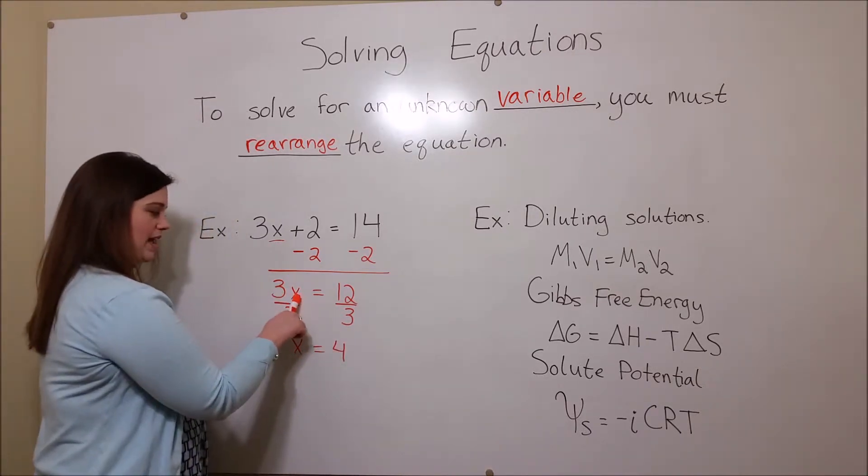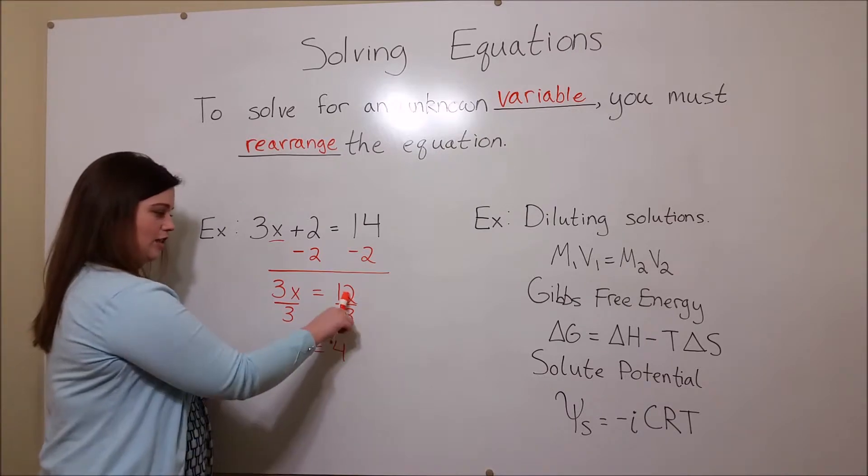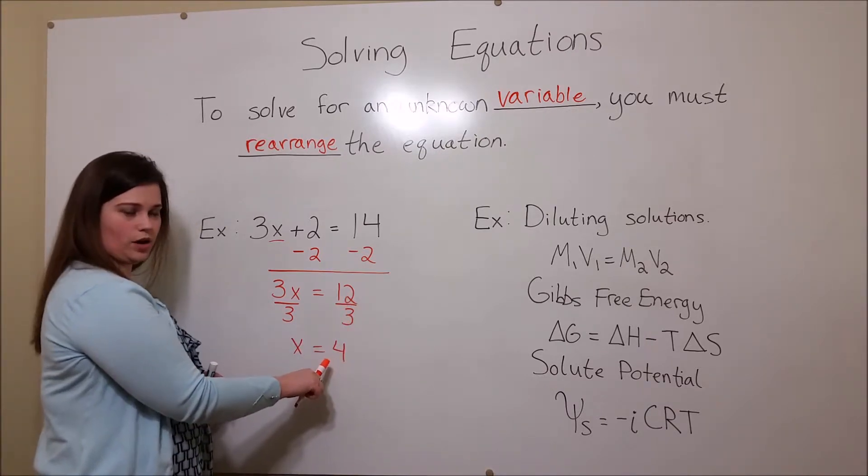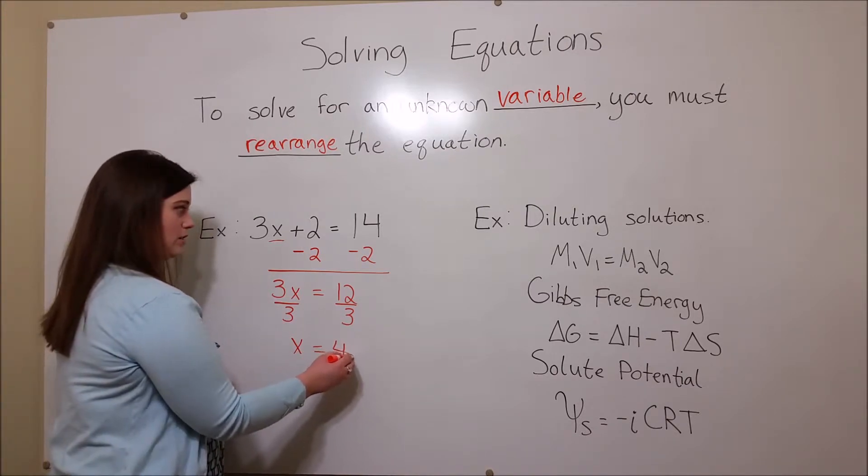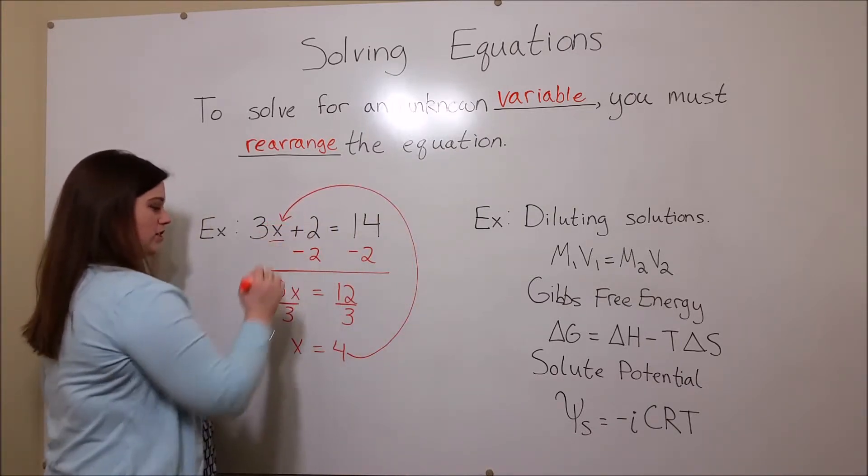This is because 3x divided by 3 is x, and 12 divided by 3 is 4. You can always double-check your math by plugging the answer that you got back into the original equation.